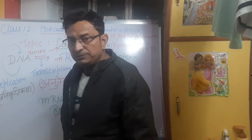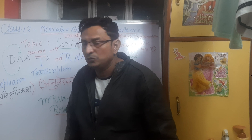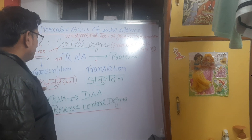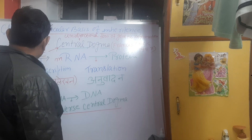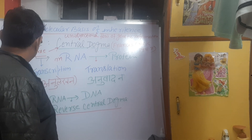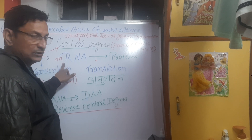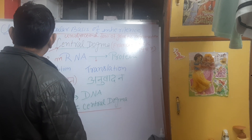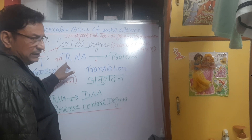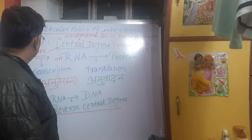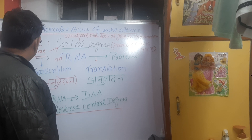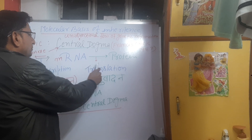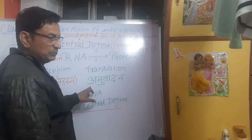Now, DNA from DNA is also formed, and that is known as replication. So we have: replication, transcription, and translation. Replication is the formation of DNA from DNA. Transcription is the copying of genetic information from one strand of DNA to form mRNA. From mRNA, protein is formed — that is translation.